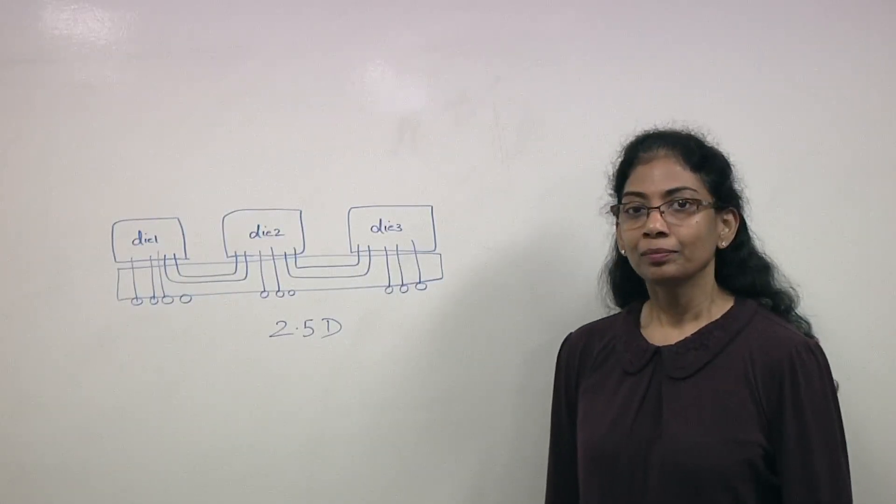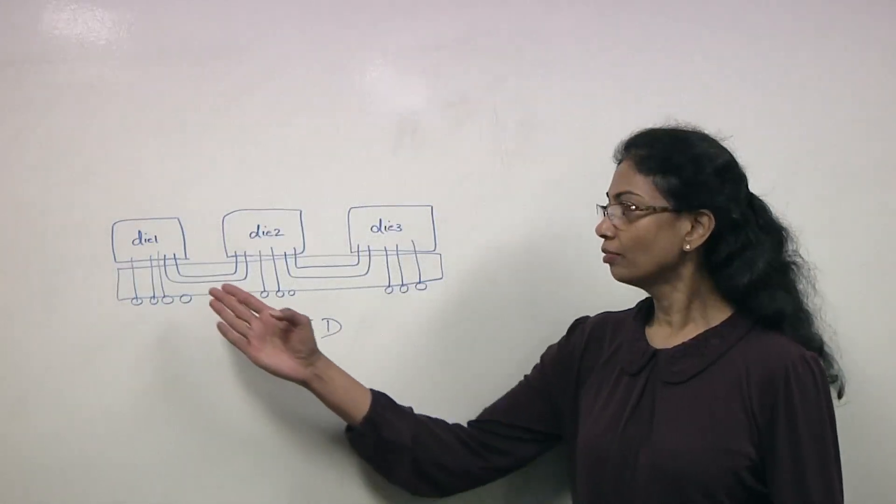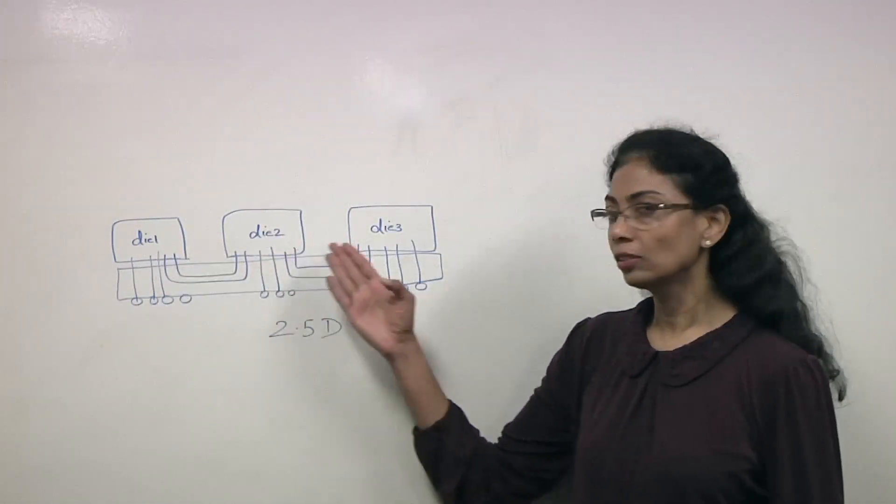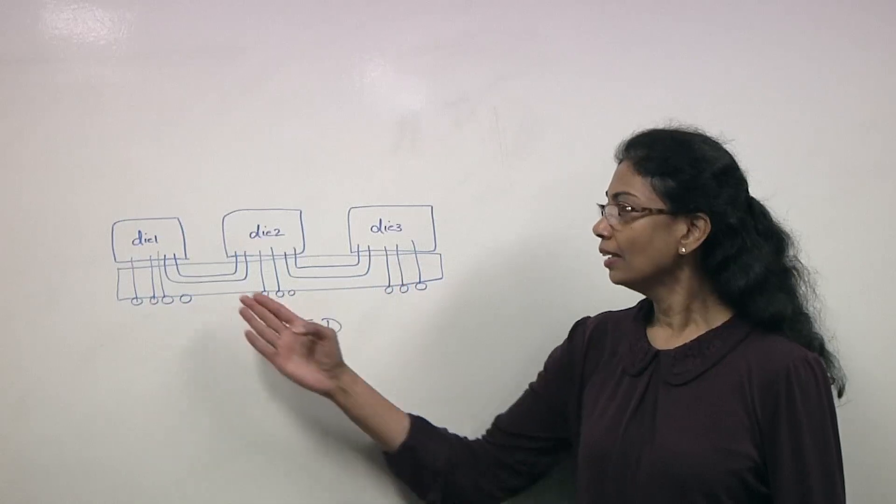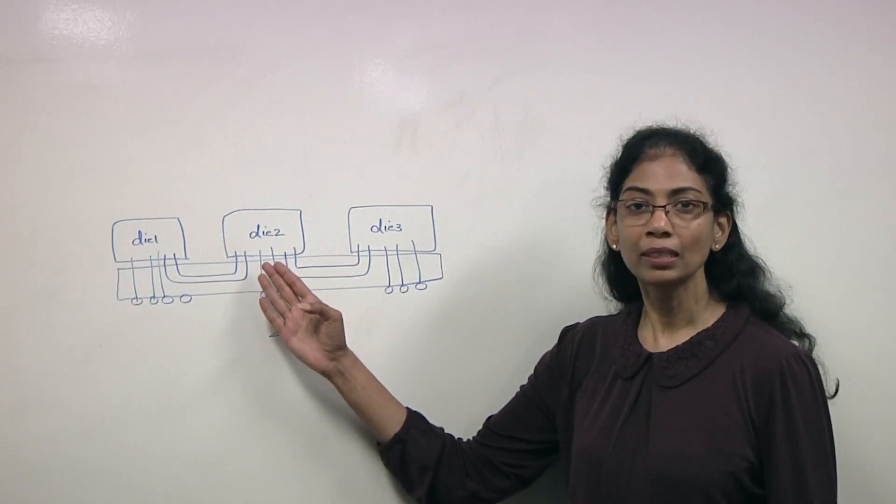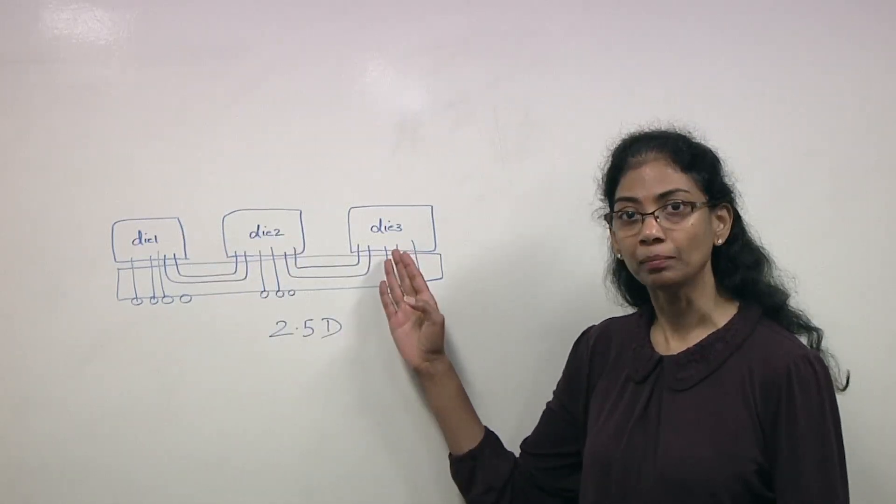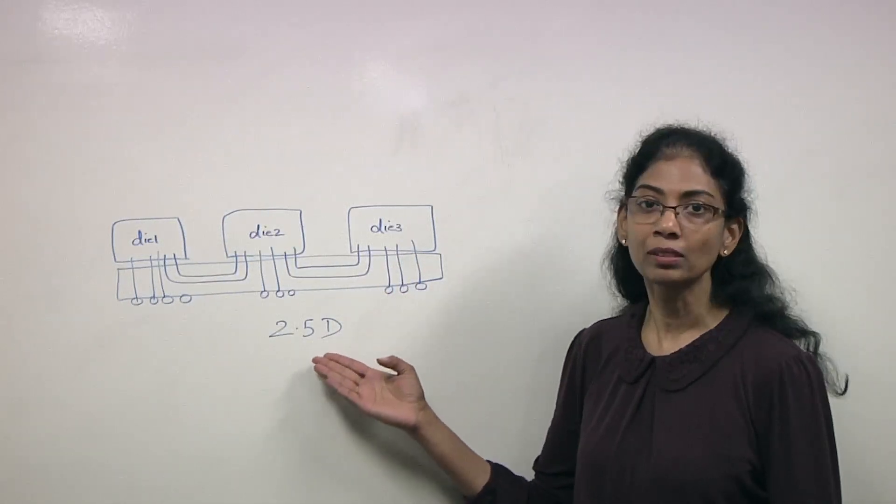Vijaya, what are we looking at here? This is a 2.5D design. We have different dies - die 1, die 2, and die 3. And they are connected via the substrate, which is called through silicon vias or TSVs between each of them. That's what the industry calls it 2.5D.